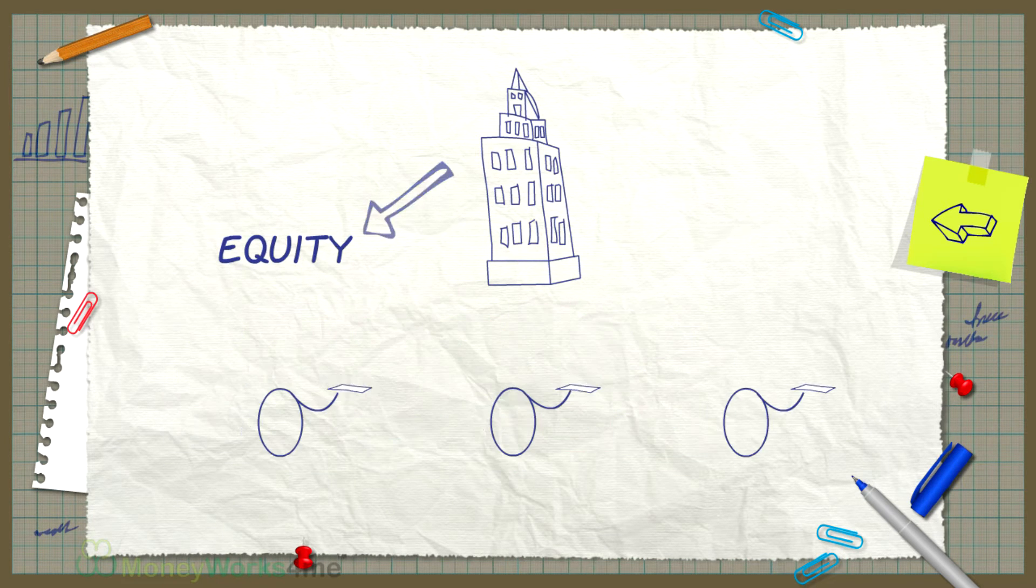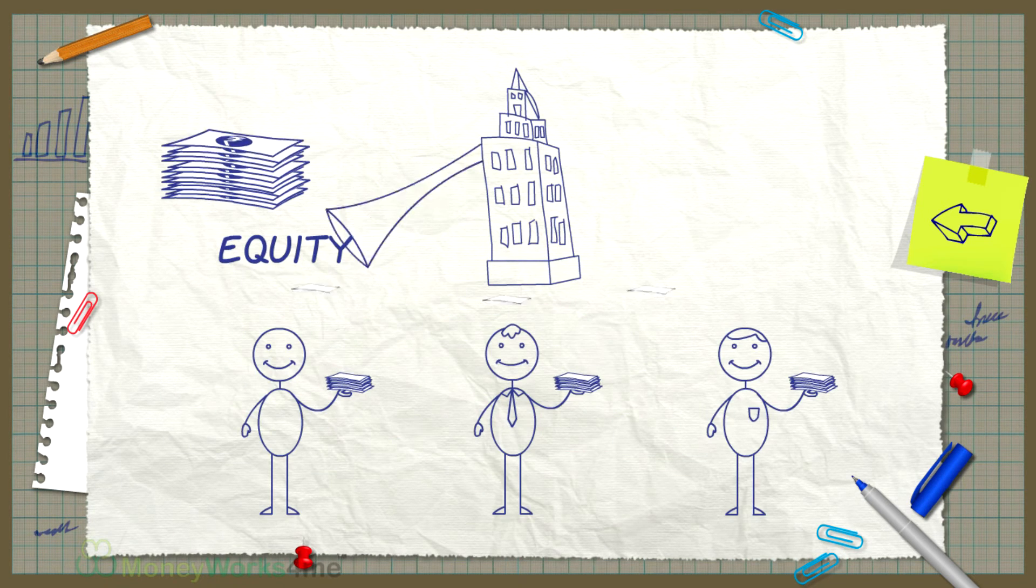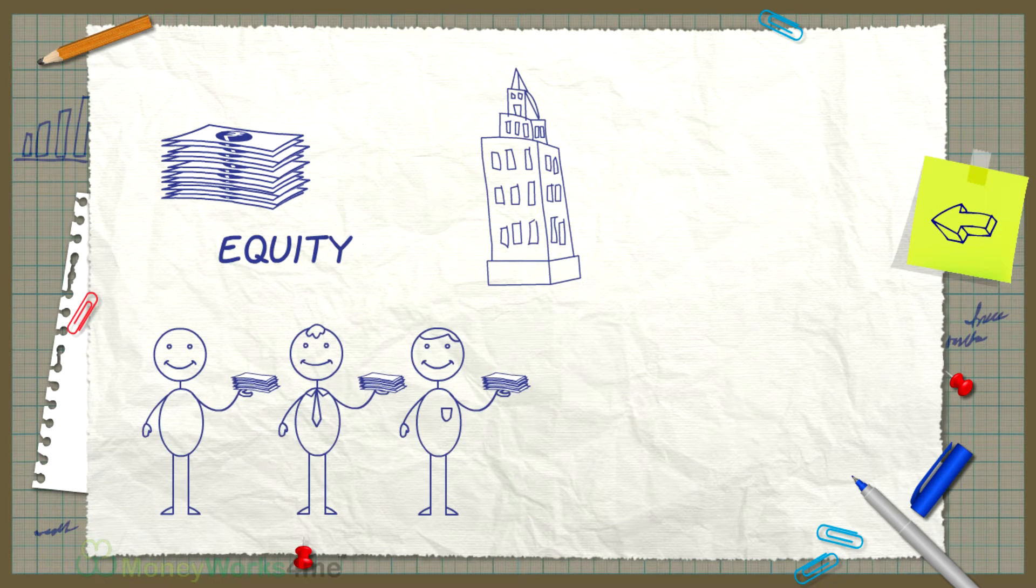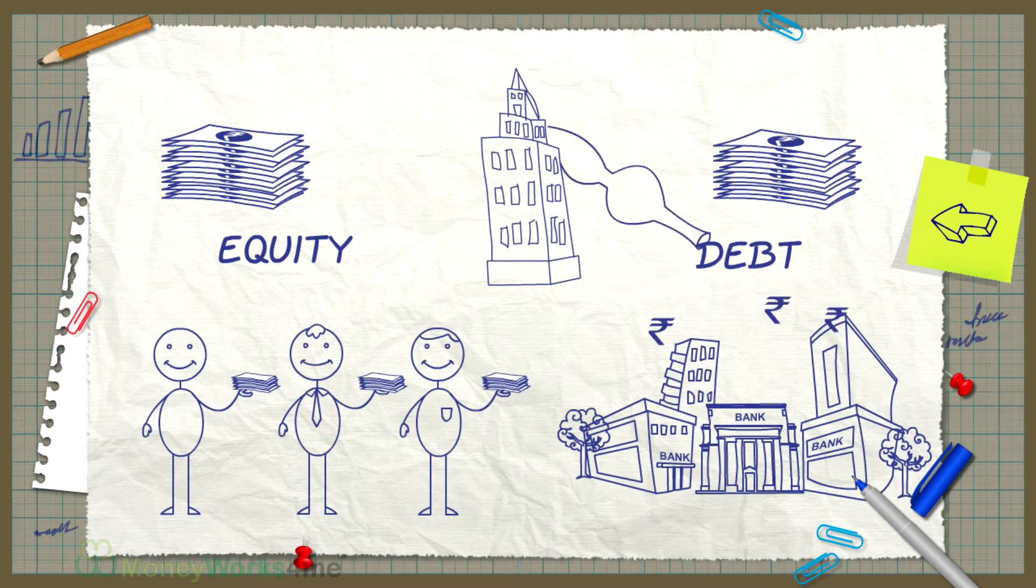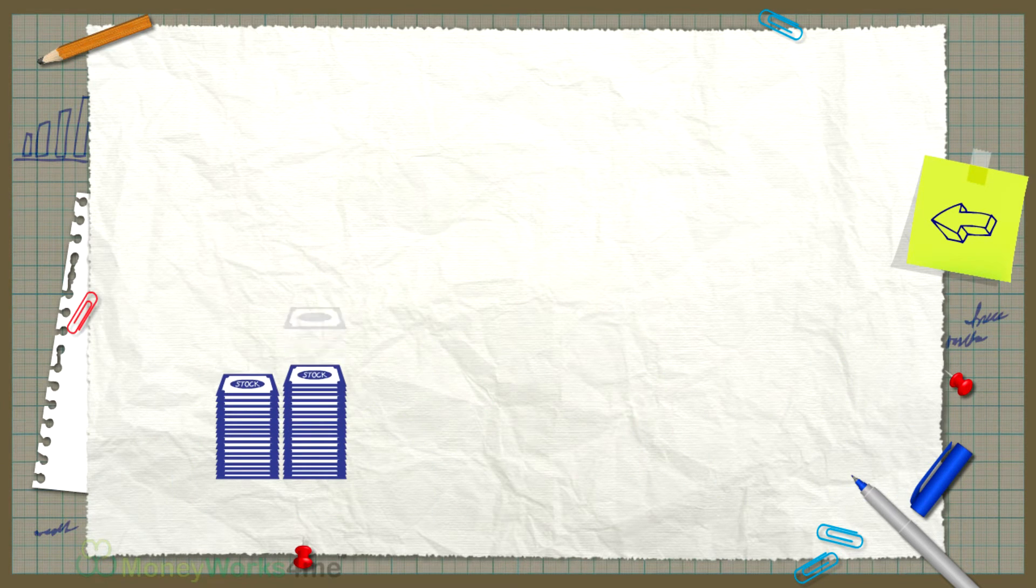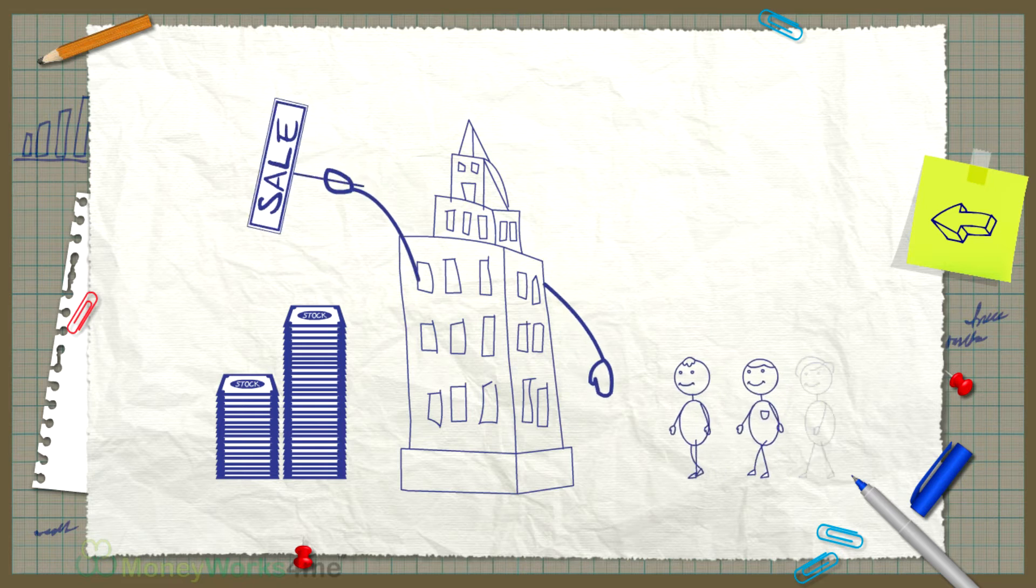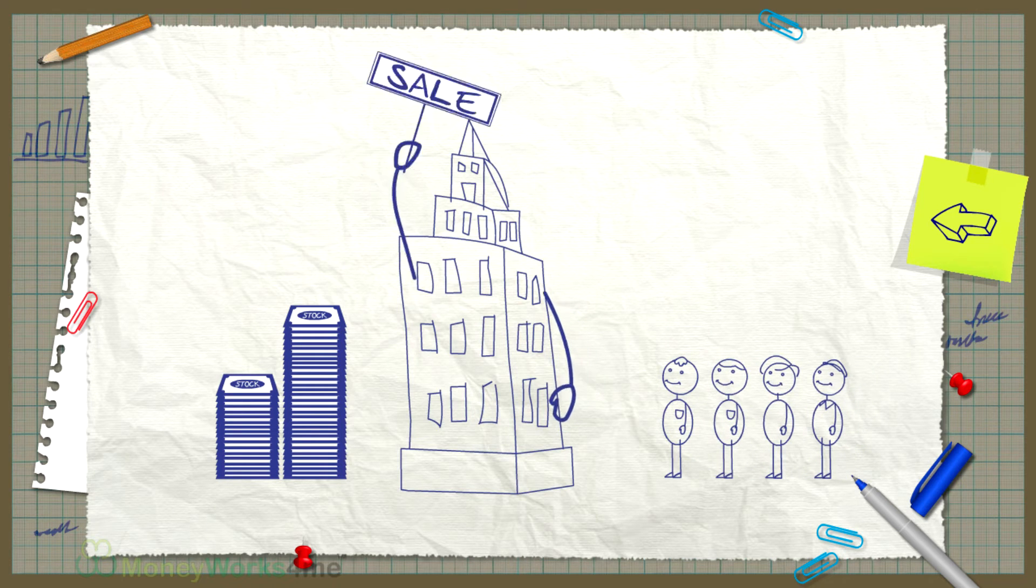Equity refers to the stock capital of the company or the money contributed by the owners of the business. Debt consists of all the loans taken by the company. In order to raise capital in the form of equity, the company can approach the public for the sale of its shares.